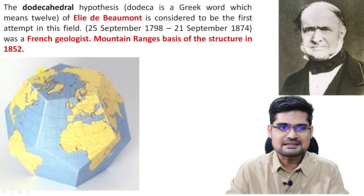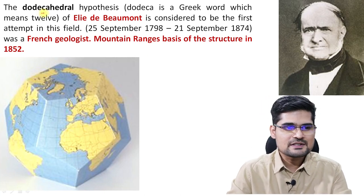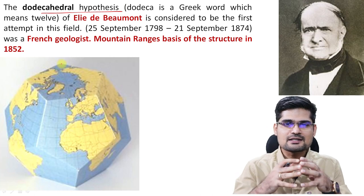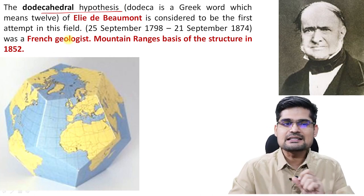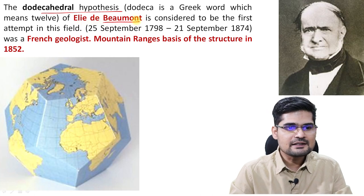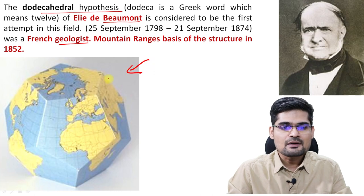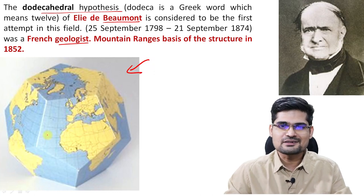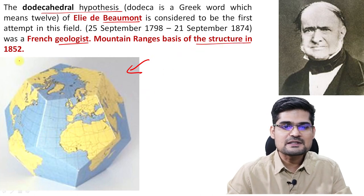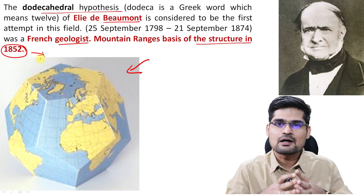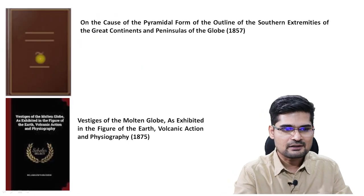Before this hypothesis came, there was another geometric hypothesis called the dodecahedral hypothesis. 'Dodeca' is a Greek word meaning 12. L.E. Beaumont, a French geologist, created this image of the earth in 12 dimensions. This dodecahedral hypothesis on mountain ranges and structural basis was proposed in 1852, which became one of the foundation principles for Lothian Green's thinking later on.